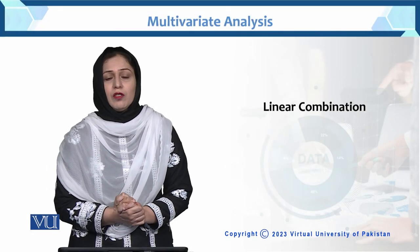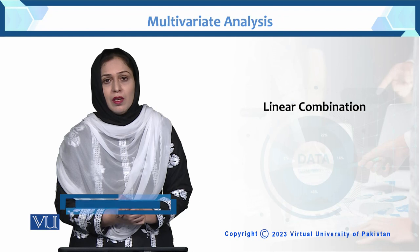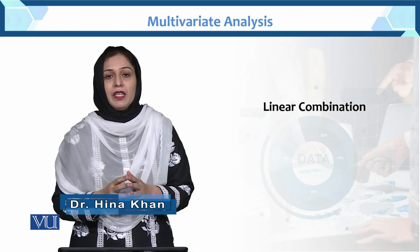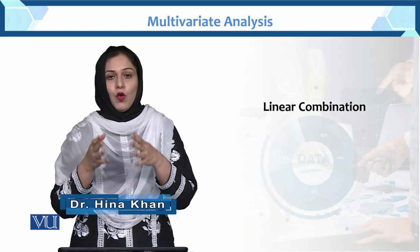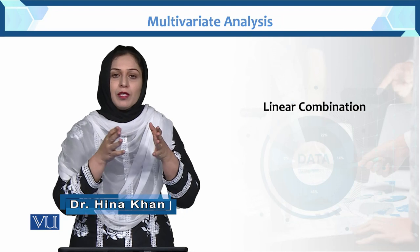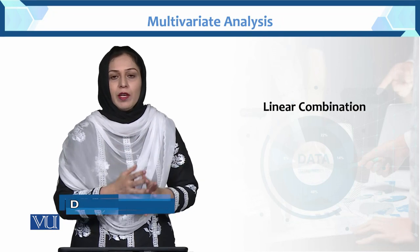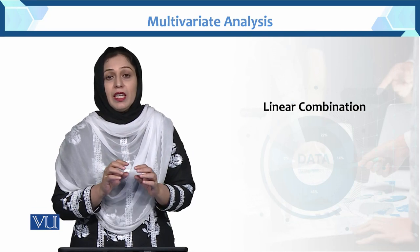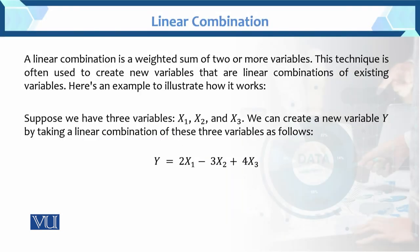This is the linear combination. What is linear combination? Linear combination is basically a transformation where we transform original variables into new variables. This is a weighted sum of two or more variables.